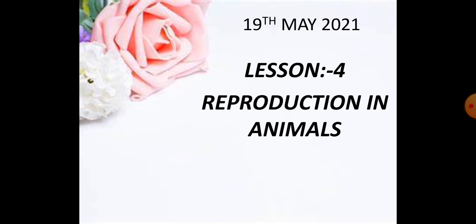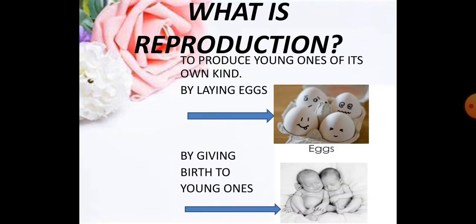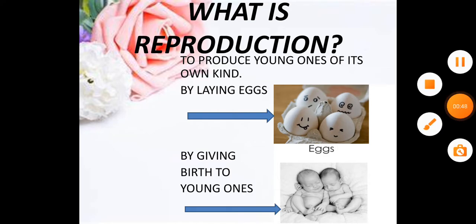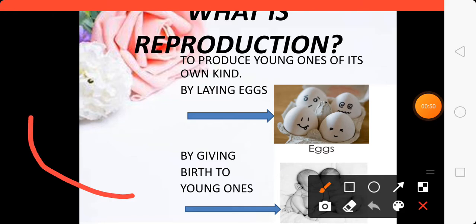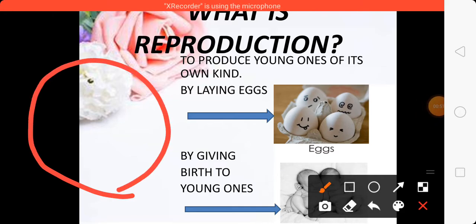Before starting the lesson, we should always know the meaning of the lesson. So first of all, what is reproduction? What is the meaning of reproduction? Reproduction is the process in which parents produce young ones of its own kind. To keep the circle of life going on this earth, reproduction is very necessary.